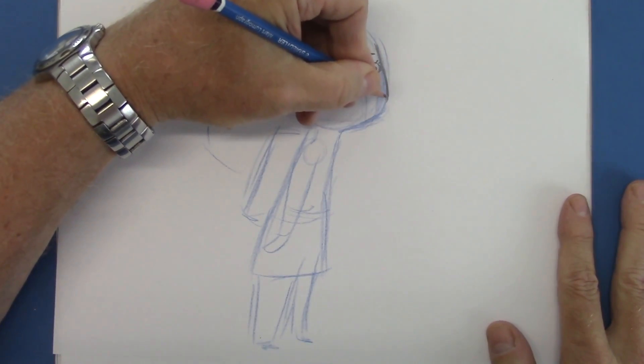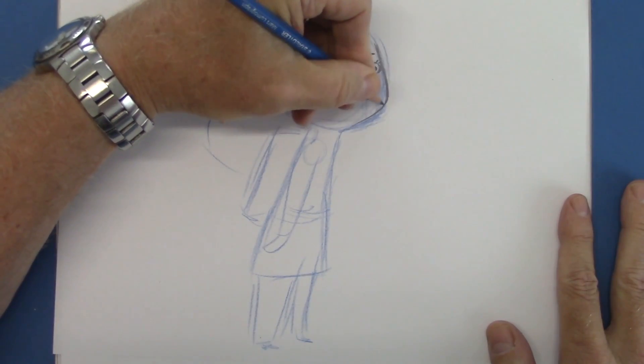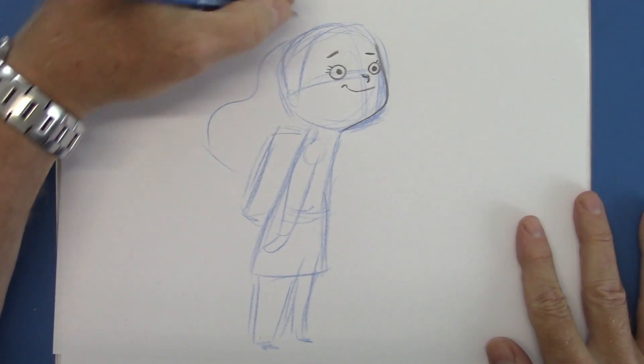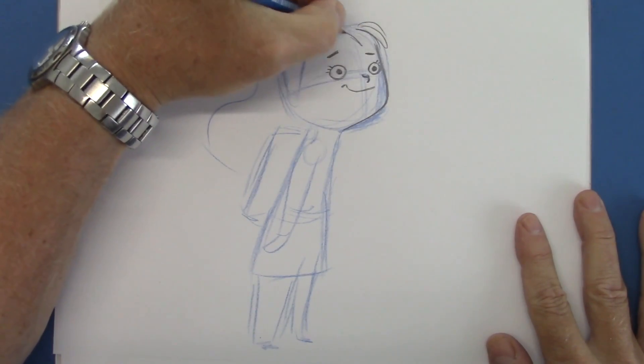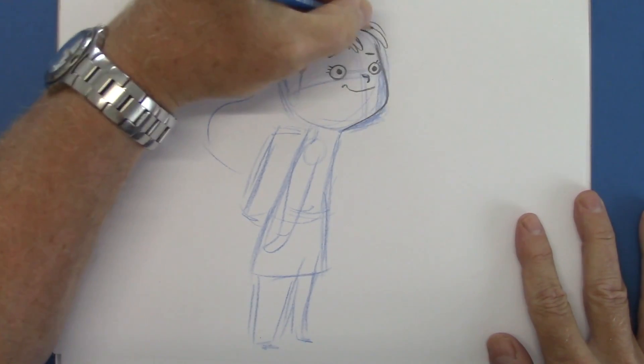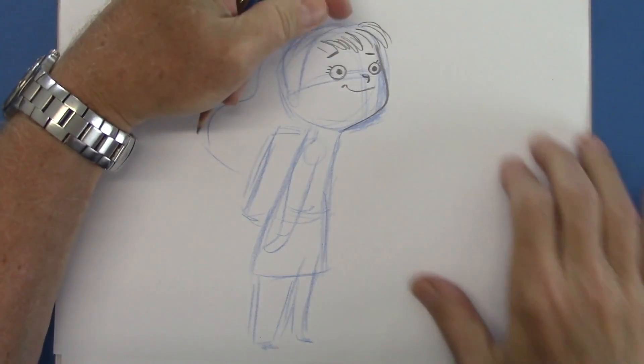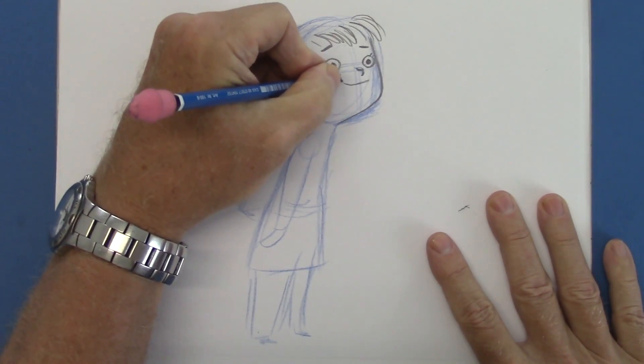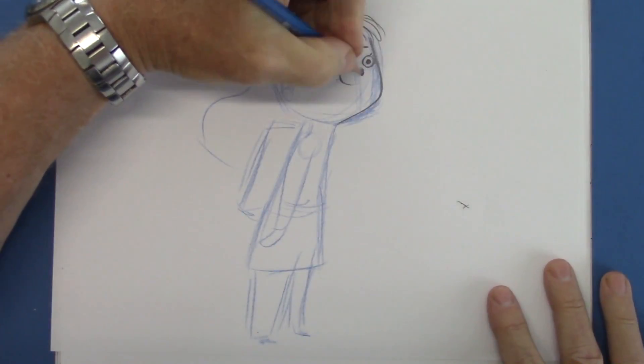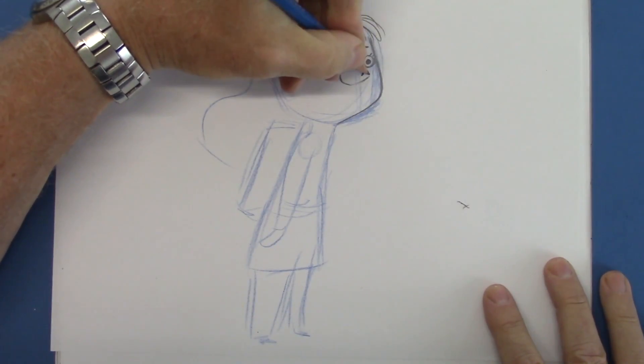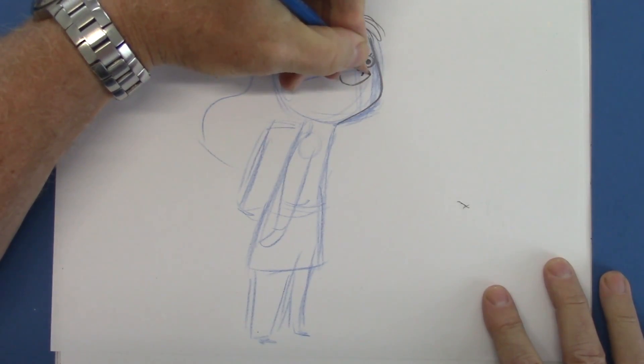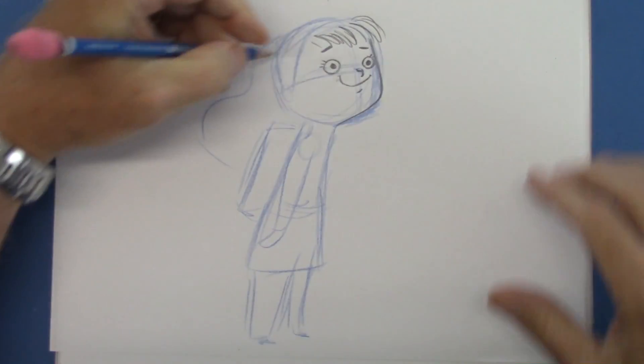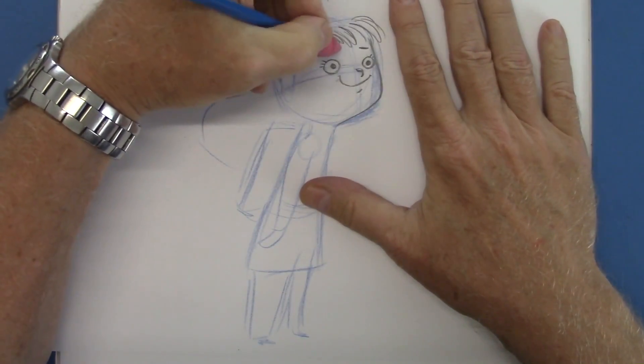And now we're going to find the outline of the head, the perimeter. Draw off her bangs here. I'm going to give her even a bigger smile. Make it, something is really, really getting her happy here. So it's going to, I'm going to tilt it up on the other side as well. And a little shadow under the, under the lip.